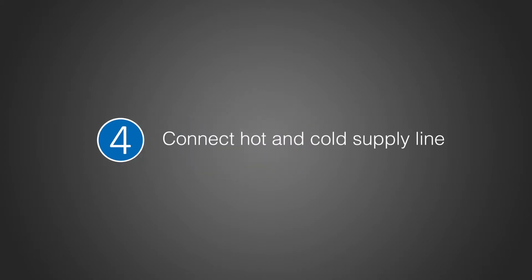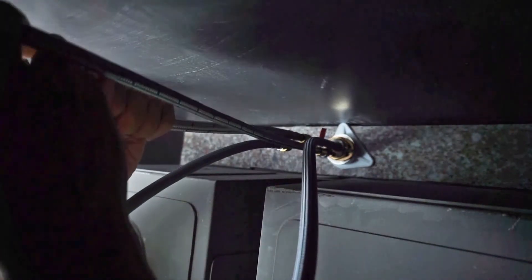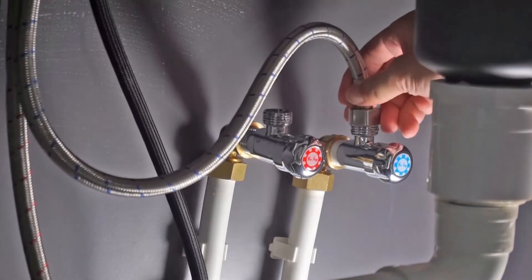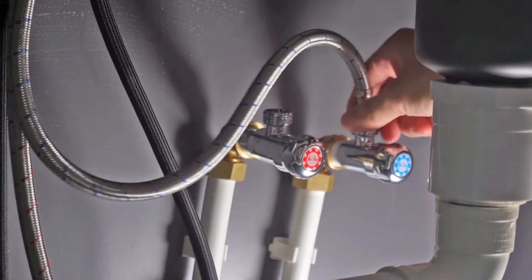Connect the hot and cold supply lines. Screw and tighten the hot and cold flexible lines to the corresponding faucet connectors. Attach flexible hose to water supply using adjustable wrench, ensure that it is tightened.